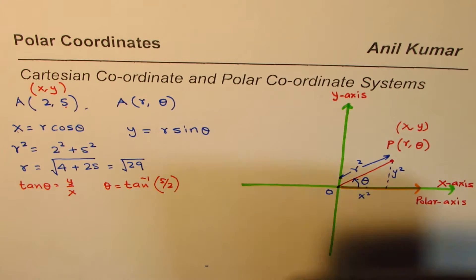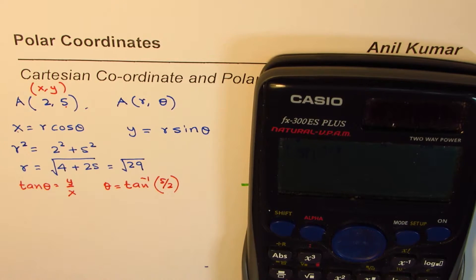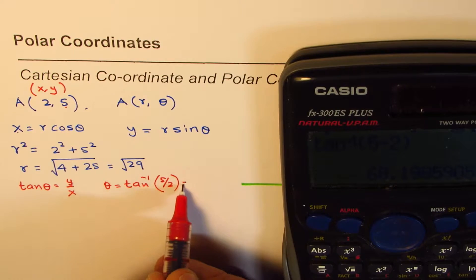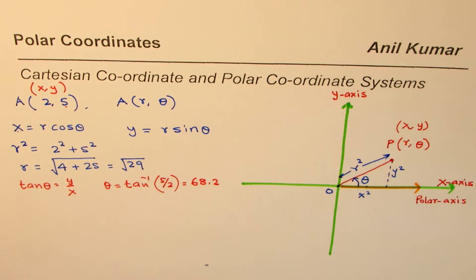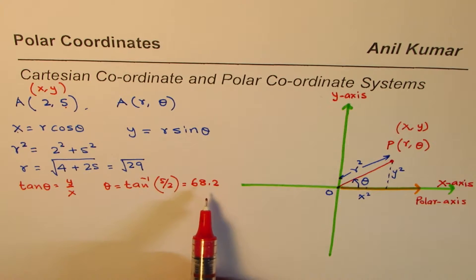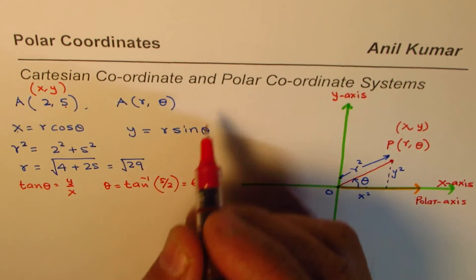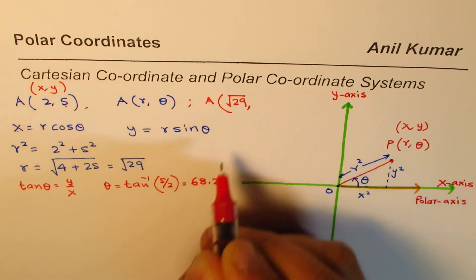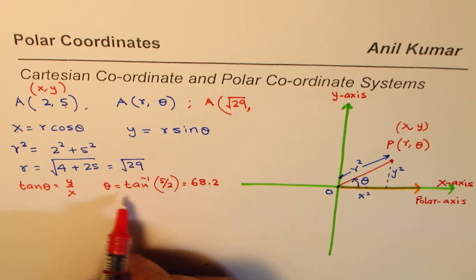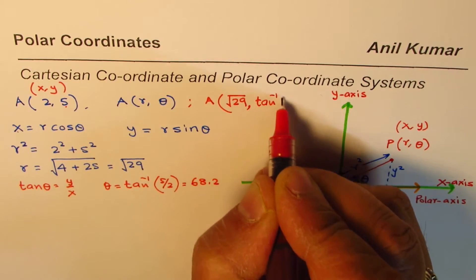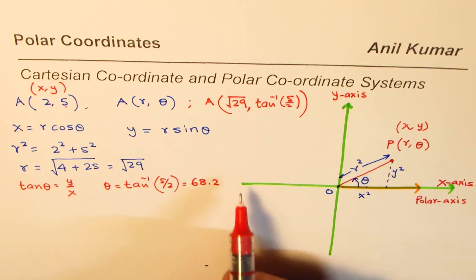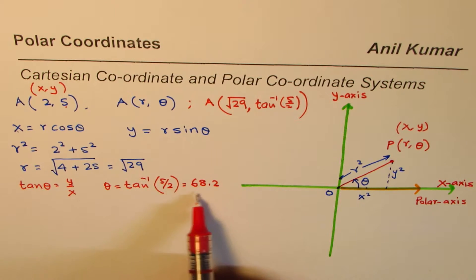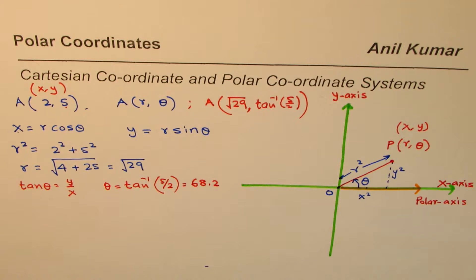Using a calculator, tan⁻¹(5/2) is approximately equal to 68.2°. Once we know this value, we can write down the coordinates of point A as (√29, 68.2°), or more precisely (√29, tan⁻¹(5/2)). That is how you can convert any coordinate point from the rectangular coordinate system to the polar coordinate system.